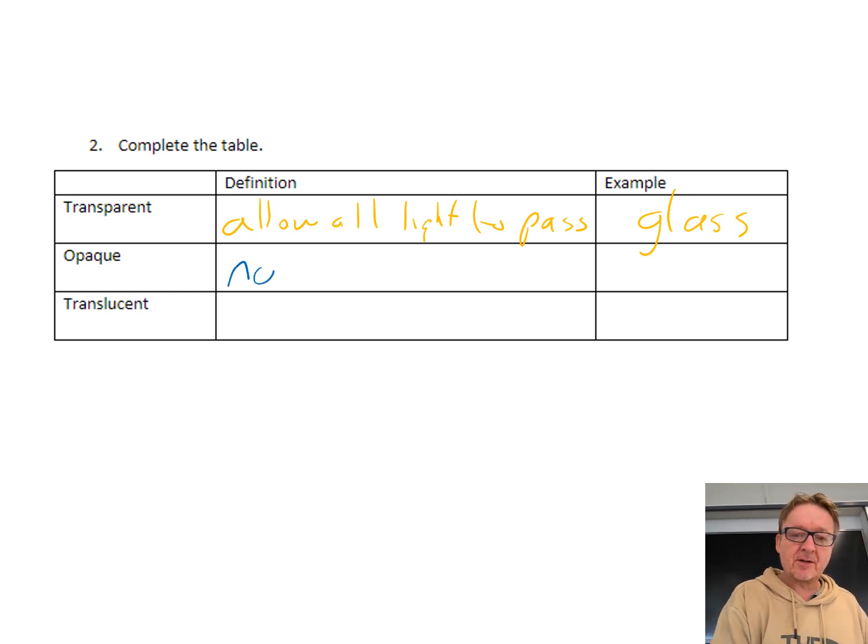Nothing more complicated than that. Complete the table, definitions. Transparent allows all light to pass. An example is glass. Opaque means no light can pass. Bricks. Translucent is some light can pass, sunglasses.